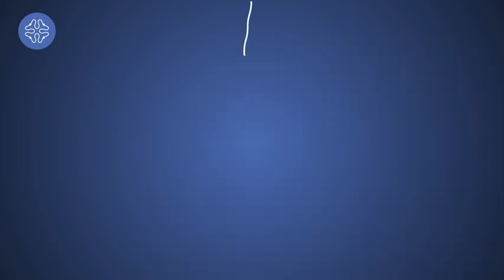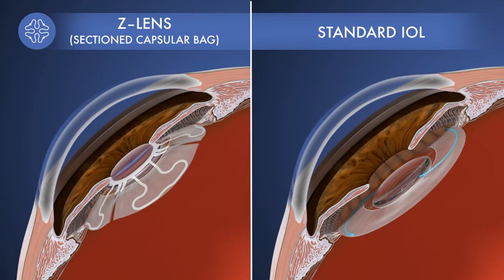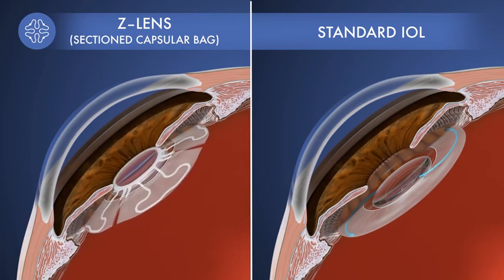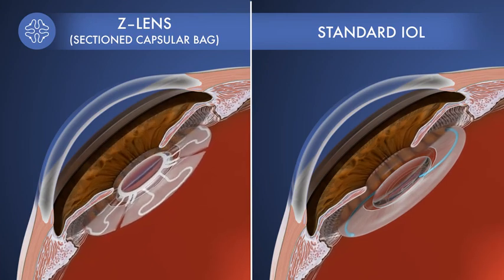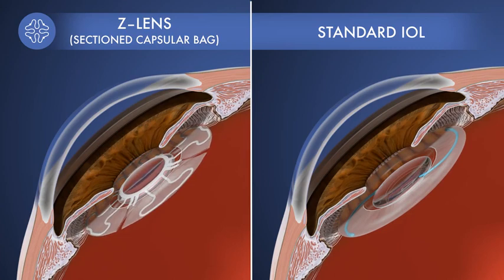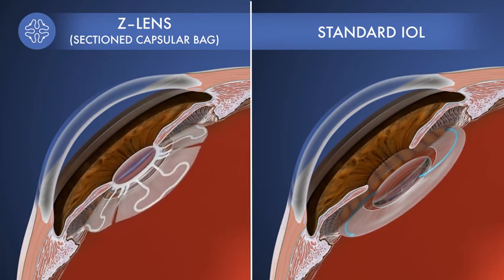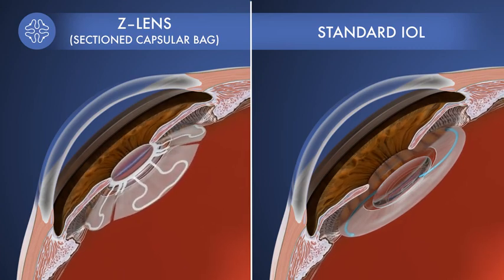In comparison, other IOLs are trapped in a rigid, fibrosed capsular bag and cannot respond to the movement of the ciliary body. The Z-Lens captures the movement of the ciliary body and provides accommodation like the natural lens.